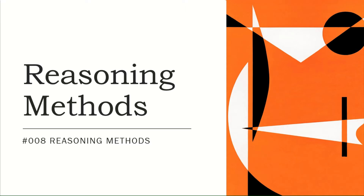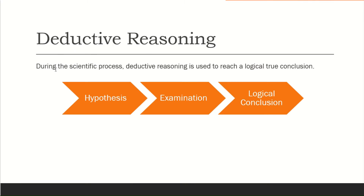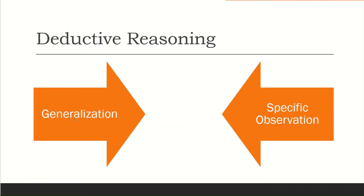Deductive reasoning is the scientific process by which we reach a logical true conclusion. How it works: it starts from a hypothesis, goes through an examination process, and gives the logical conclusion. It takes a general concept or theory through several examinations and converts it into a specific and logical conclusion.